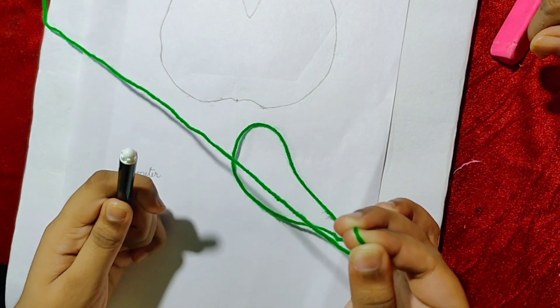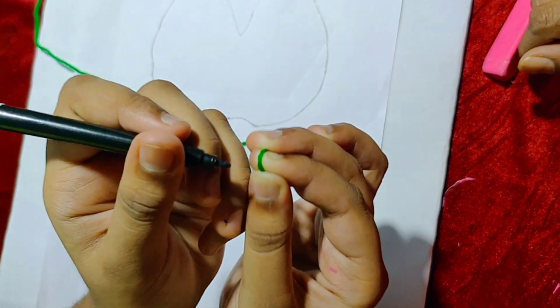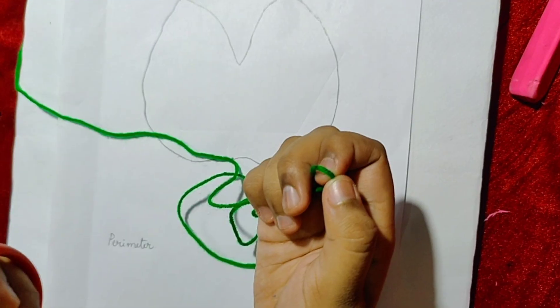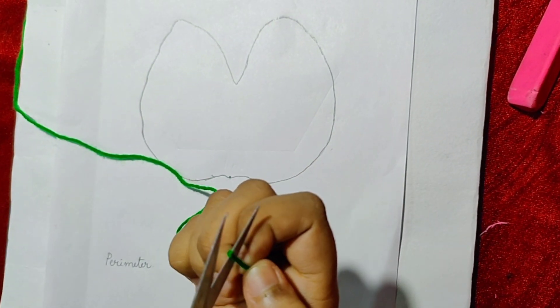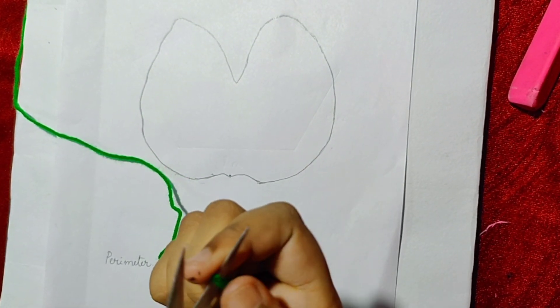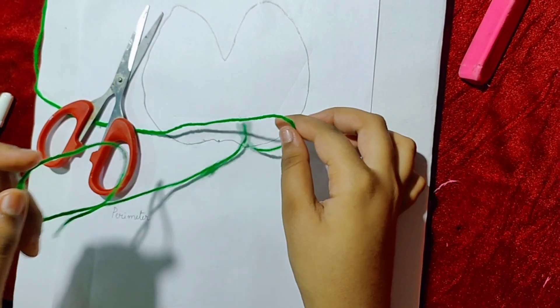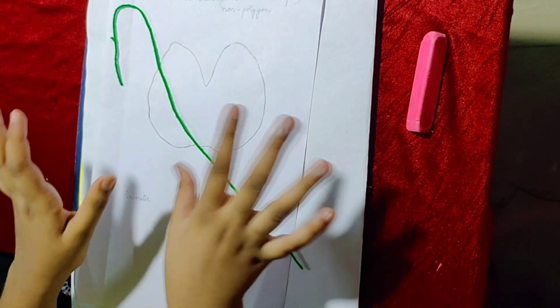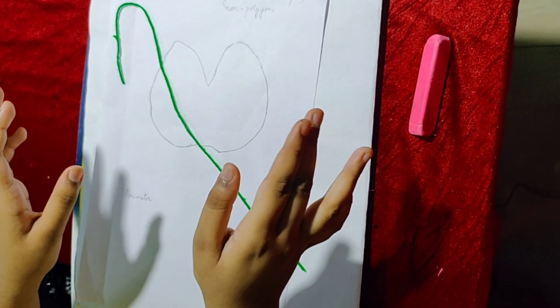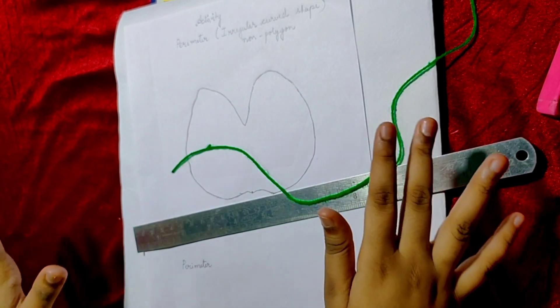We can mark with a sketch pen. Let's cut it. This is the length of the boundary of the figure. Let's take the measurement of this thread.